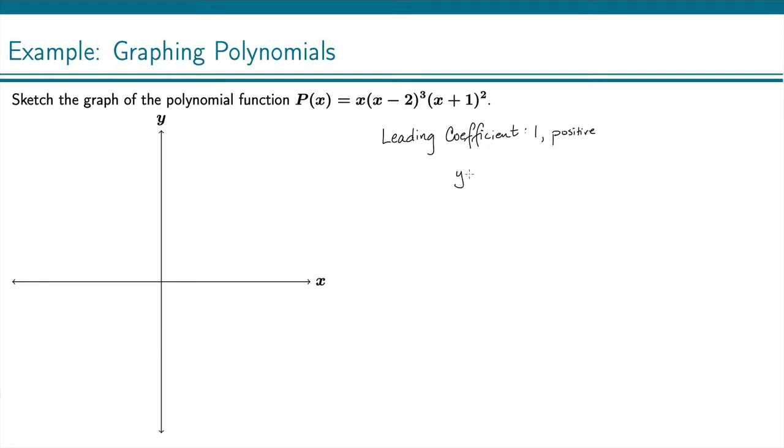And a positive leading coefficient tells you that the right side is going up. So y approaches infinity, that means I'm going up, as x approaches infinity, meaning on the right side of the graph.